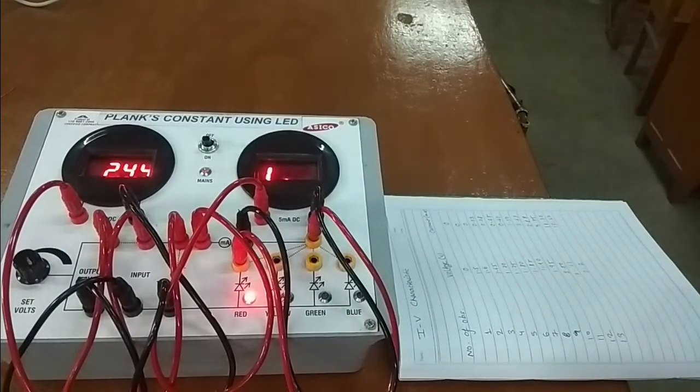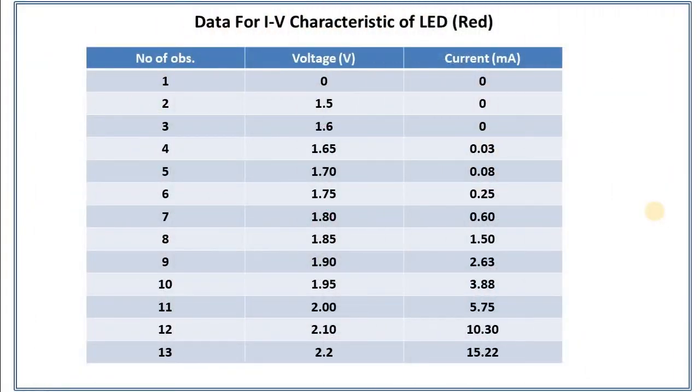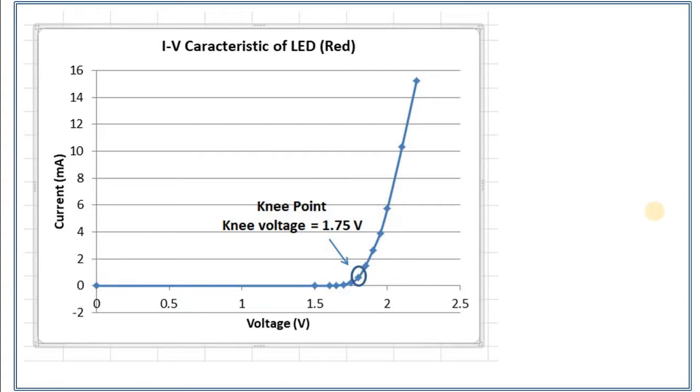Now what we will do, we will draw this. This is the data for the IV characteristic of red color LED. This is the table for that. Using this data, we can plot the graph and from graph, you can easily point out the knee voltage. If you look at here, this is the knee point and corresponding voltage is 1.75 volt.